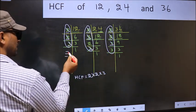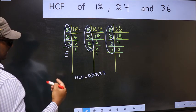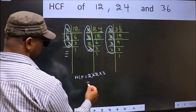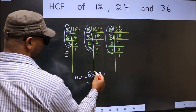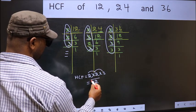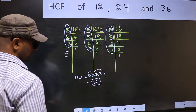No more numbers have been left out. So our HCF is 2 × 2, 4 × 3, 12 is our HCF. Thanks for joining us.